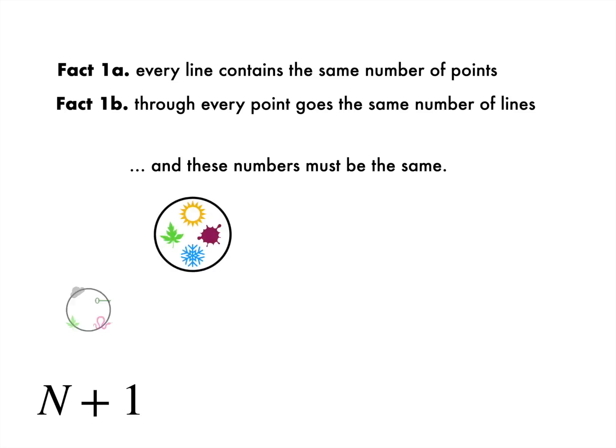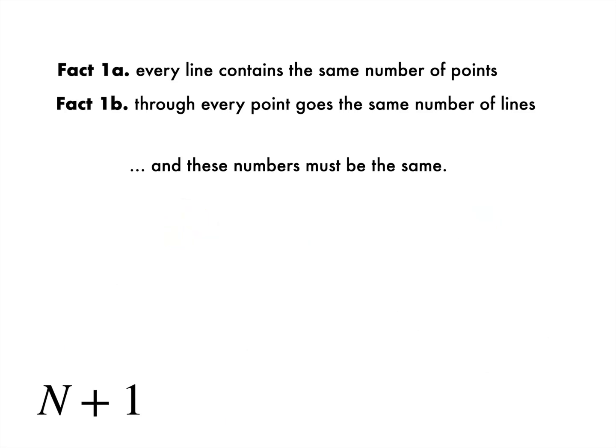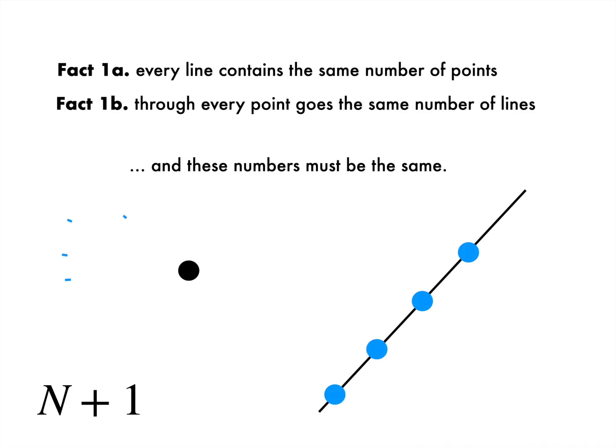This means that if you want four symbols on every card, then automatically every symbol will appear exactly four times. To see this, let's pick a random point and consider any line not going through it. This line has n+1 points on it. By rule one, this generates an equal number of lines going through the point of interest.